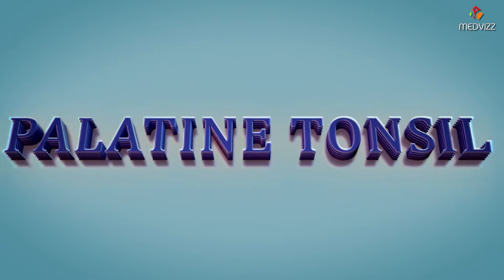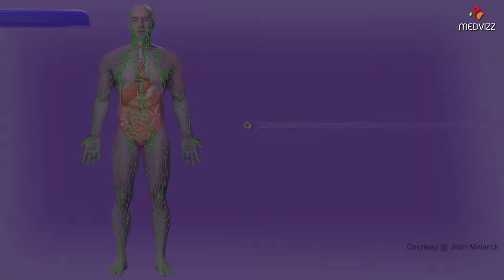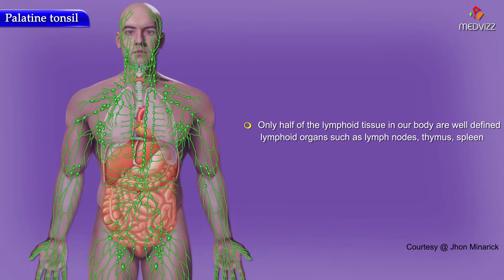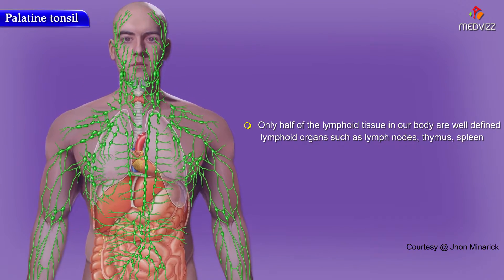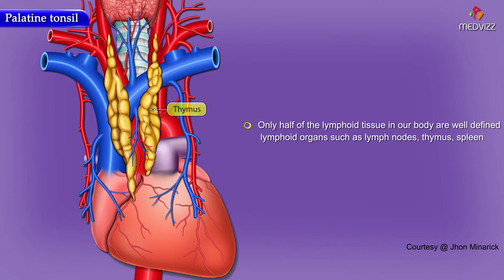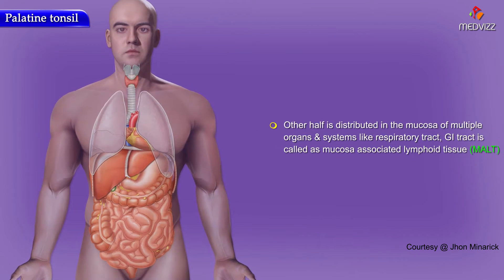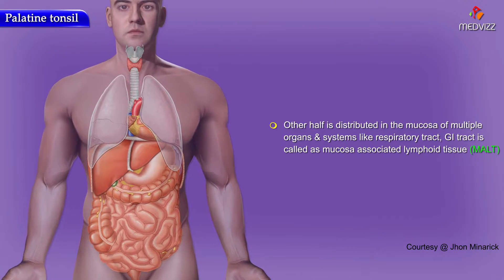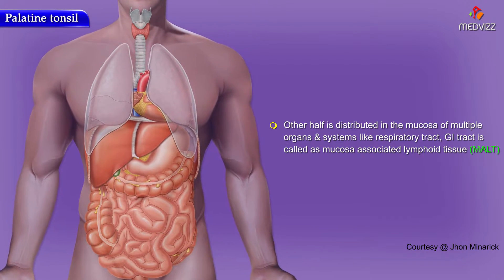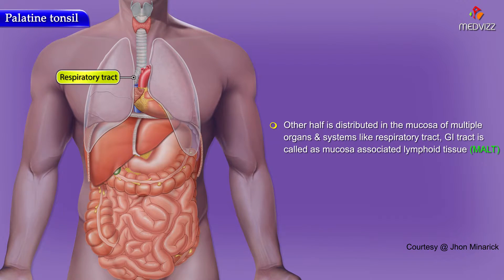This is a palatine tonsil. Only approximately half of the lymphoid tissue in your body is in well-defined lymphoid organs such as lymph nodes, thymus, and spleen. The other half is distributed in the mucosa of multiple organs and organ systems like the respiratory tract, GU tract, and gastrointestinal tract — this is called mucosal associated lymphoid tissue, or MALT.